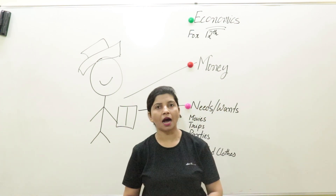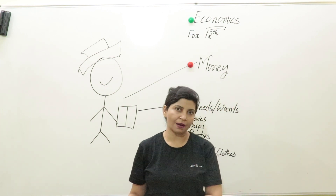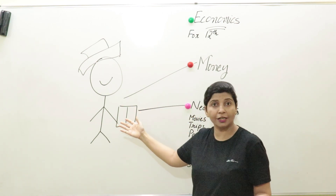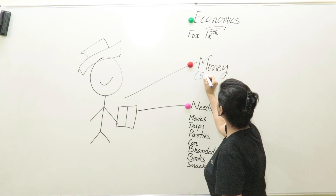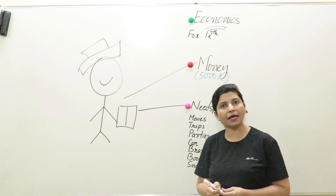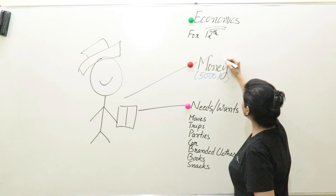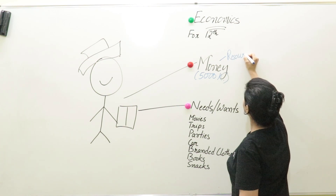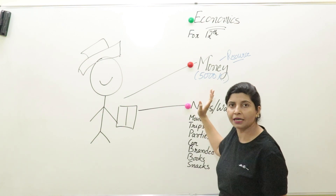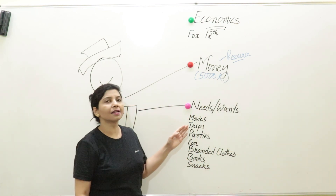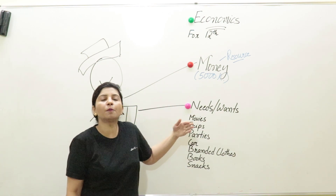We use economics in our day-to-day life — we daily use economics but we just don't know it. Let's take an example: a student just like you, who has a book and is ready to go to school. He receives a certain amount of money from his parents — say 5000 rupees as pocket money every month. For the whole month, he won't be getting any other money. In economics, we call this money a 'resource' — a limited amount of money.